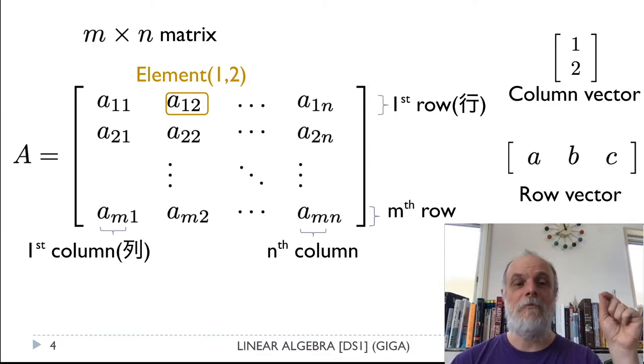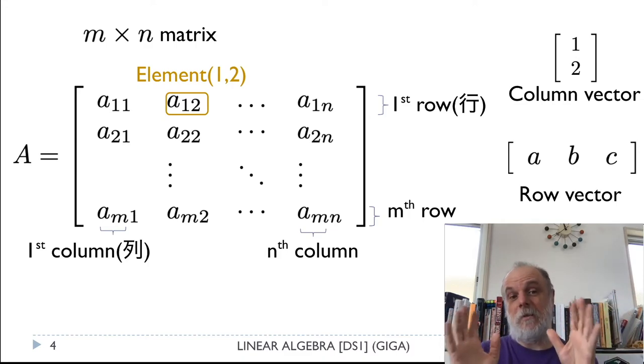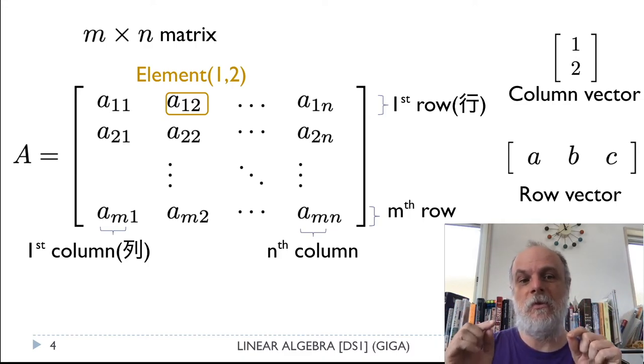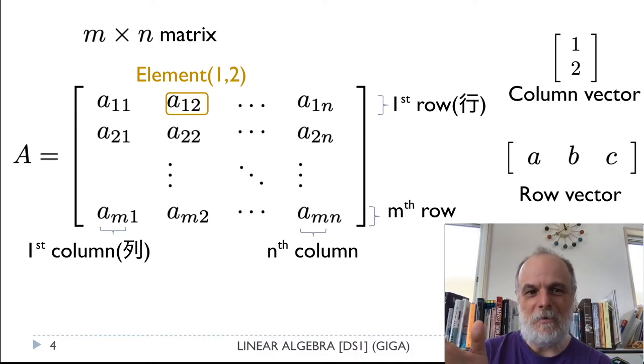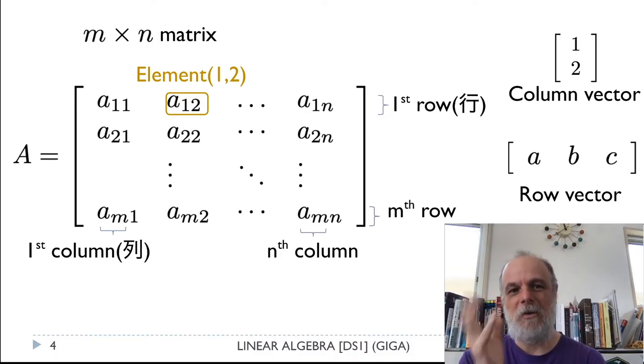So the entry in the upper left we call the one one element. Sometimes you'll see me write the element in the upper left as being zero zero instead of one one. Mathematicians usually use one one, but computer scientists often use zero zero depending on the programming language you're talking about and the kind of problem you're trying to solve. So most of the time in this class it's going to be one one, but keep an eye on it just to be on the safe side.